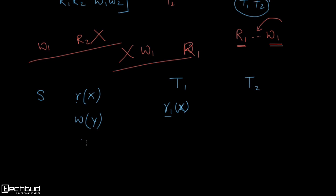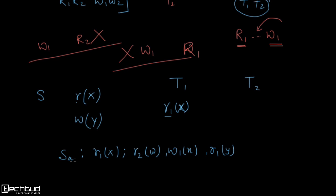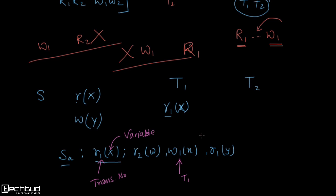Looking at a given schedule, for example S_A: the subscript tells us which transaction the operation belongs to, and the letter in parentheses tells us the data item. So r1(X) means a read operation from transaction T1 on data item X, W1(X) means a write from T1 on X, r1(Y) is a read from T1 on Y, and r2(Y) is a read from T2 on Y.